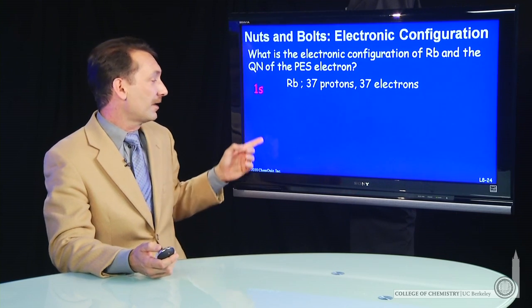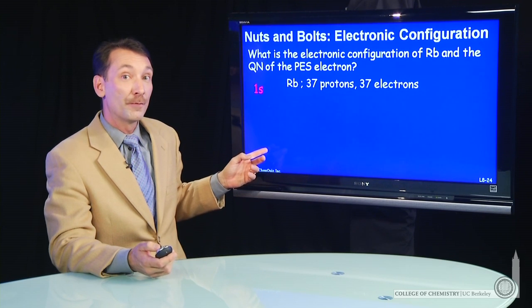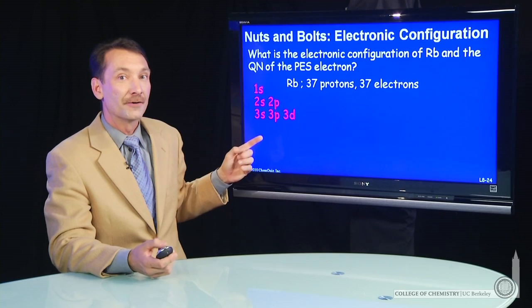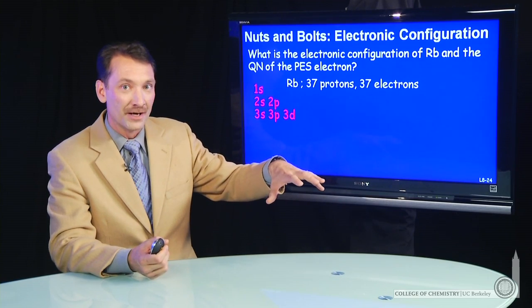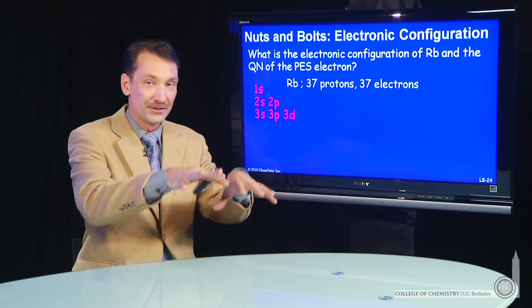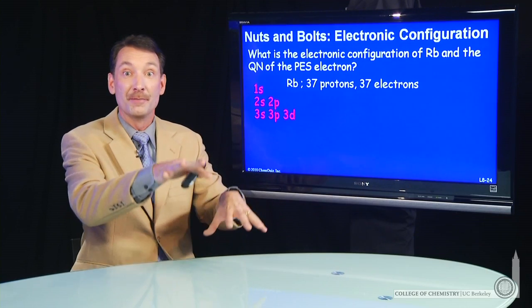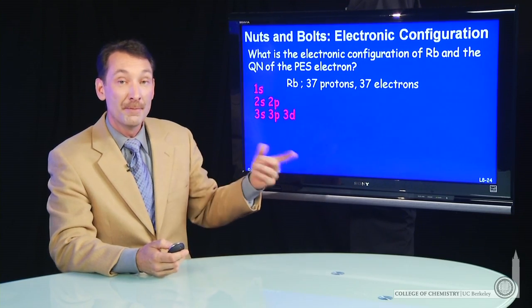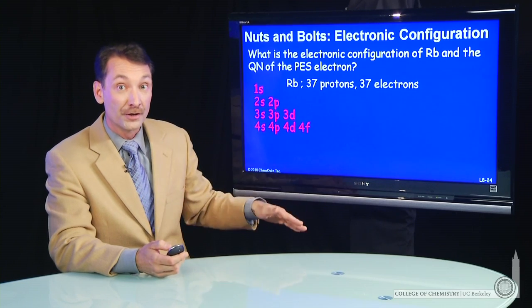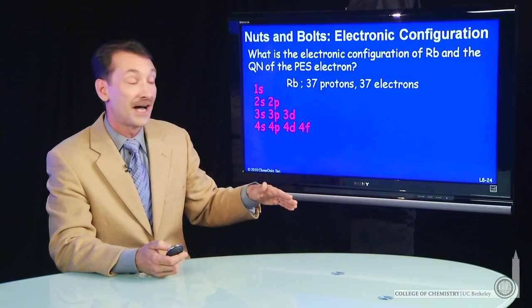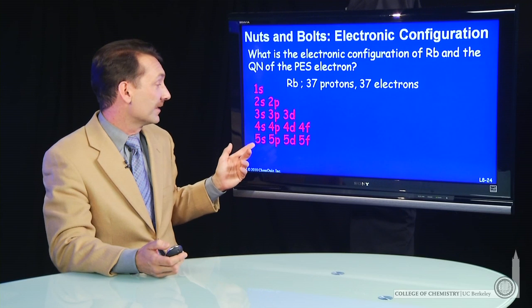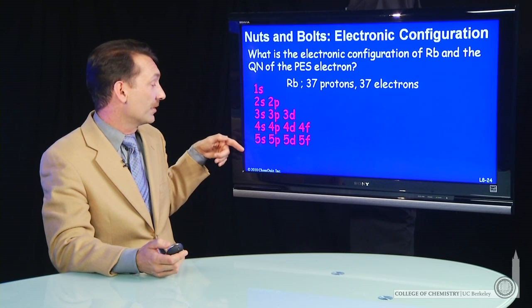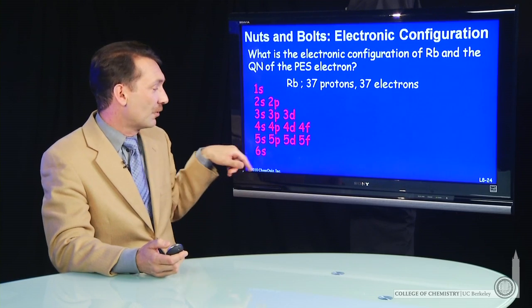Now we're going to take all the possible orbitals and write them out in a diagrammatic way. Remember, as you add electrons, the energy levels of the orbitals shift around a bit. So there's a little device you can use to remember the actual order of which energy level is the highest. You write them all out like this: the 1s, the 2s, the 3s, the 4s, the 5s, and you can keep going - 6s, et cetera. We won't need that many orbitals for rubidium.